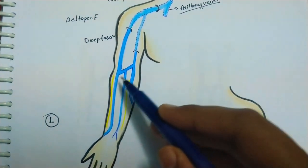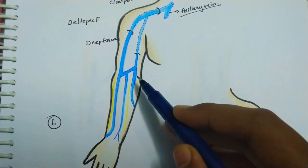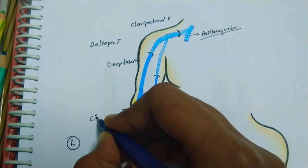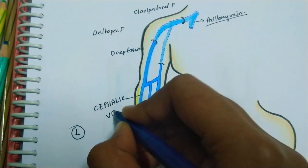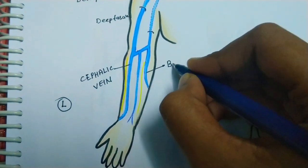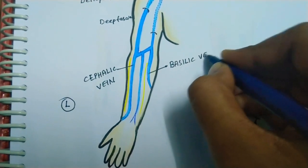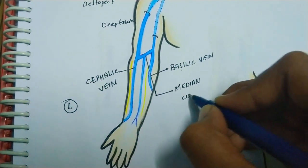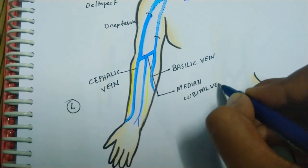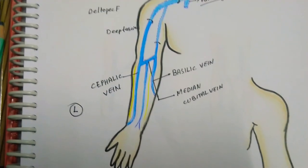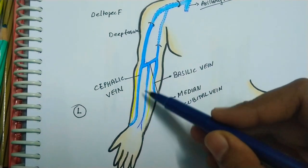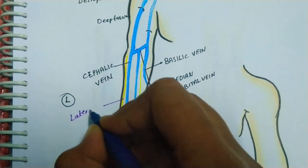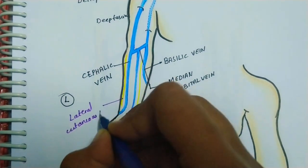At the elbow level, the greater amount of blood is shunted from the cephalic to the basilic vein through the median cubital vein. The cephalic vein is accompanied by the lateral cutaneous nerve of the forearm.